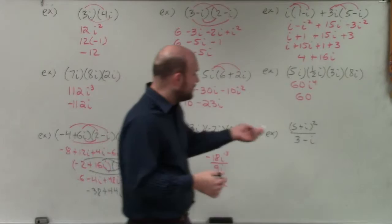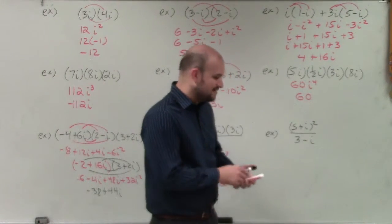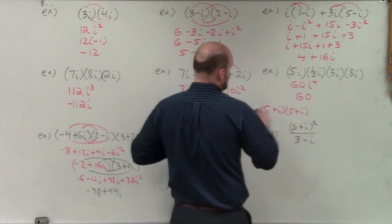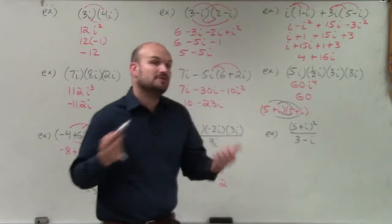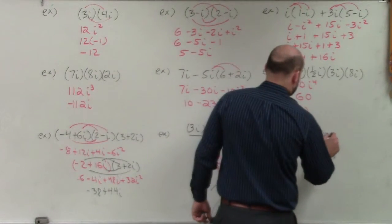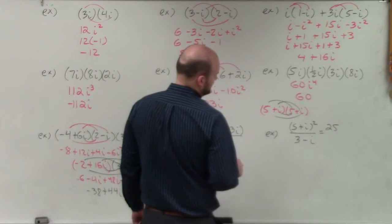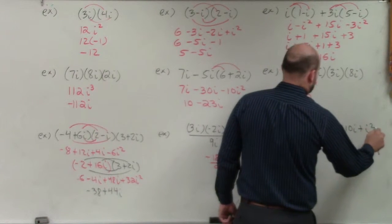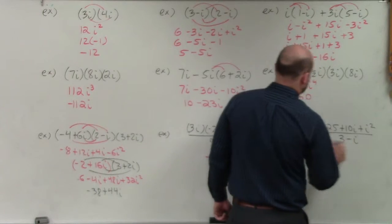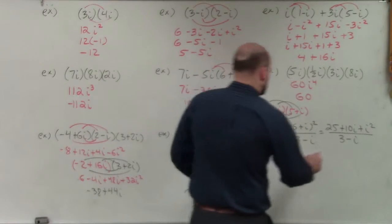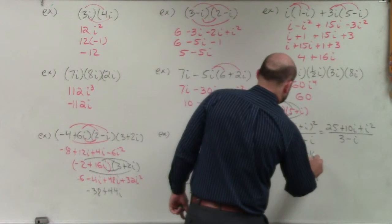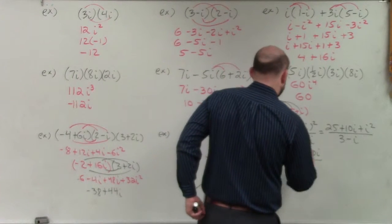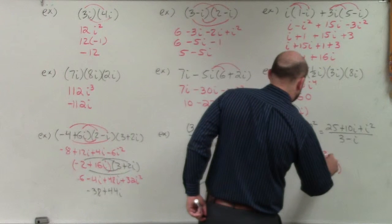For this next example, we have to rationalize the denominator. But before we do that, we have to multiply out the numerator. Remember that (5 plus i) squared is (5 plus i) times (5 plus i), so we apply FOIL, which produces a perfect square trinomial: 25 plus 10i plus i squared, all over 3 minus i. i squared is negative 1, so that gives me 24. In reality, I have 24 plus 10i all over 3 minus i. To rationalize and get the imaginary number off the bottom, I multiply by the conjugate 3 plus i.